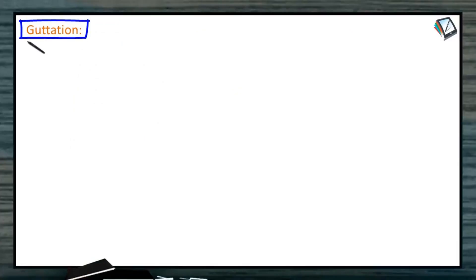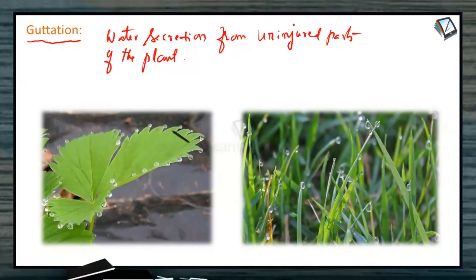Guttation is water secretion from uninjured parts of the plant. Look at these images, these are the tips of the leaf margin and these water drops.